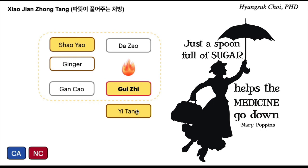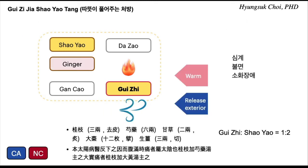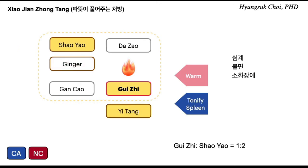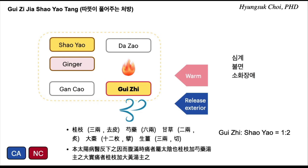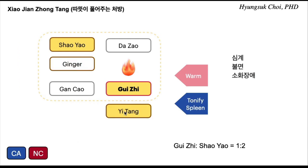A spoonful of sugar makes it go down — am I correct? Do you remember that from Mary Poppins? That is what xiao-jian-jong-tang does. So all three formulas have the same ingredients, but the ratio is the only difference, and maybe just added sugar.